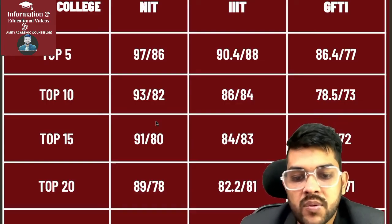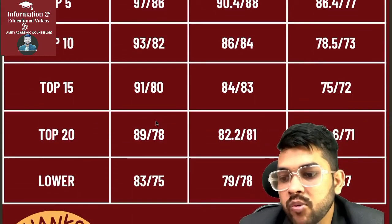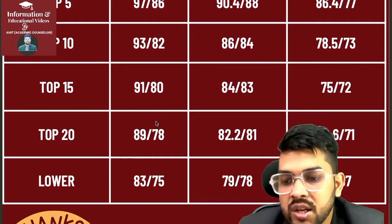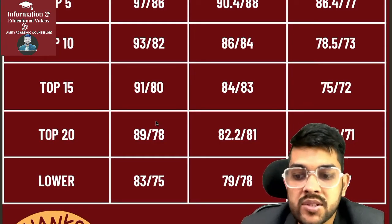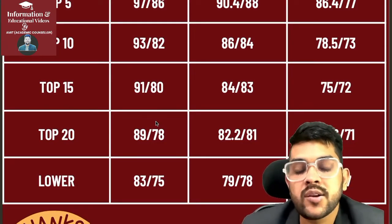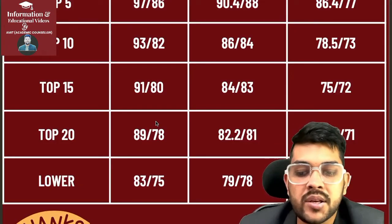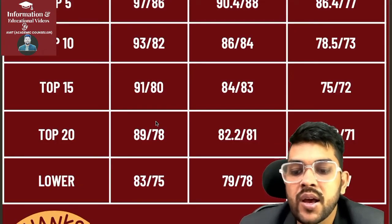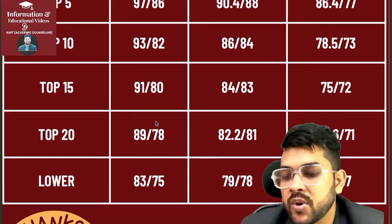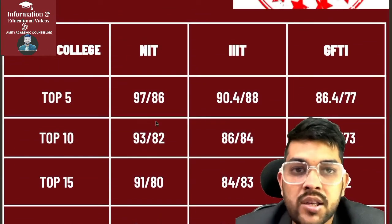For lower-tier NITs — any NIT with CS branch for SC category — 83 percentile, and for the lower branch in NIT, 75 percentile. For IITs (Triple-I): 79 and 78. For GFTIs: 68 and 67. This was the complete information regarding SC category cutoff percentiles.